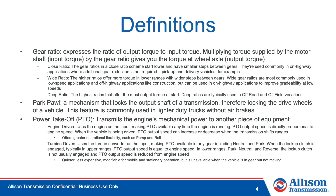Park Pawl is a mechanism that locks the output shaft of a transmission, therefore locking the drive wheels of a vehicle. This feature is commonly used in lighter duty trucks without air brakes. Power takeoff, or PTO, transmits the engine's mechanical power to another piece of equipment. There are two types of PTO: engine-driven and turbine-driven. Engine-driven PTO uses the engine as the input, making PTO available anytime the engine is running. PTO output speed is directly proportional to engine speed. When the vehicle is being driven, PTO output speed can increase or decrease when the transmission shifts ranges. Engine-driven PTO offers greater operational flexibility than other PTO offerings, such as the pump and roll feature.